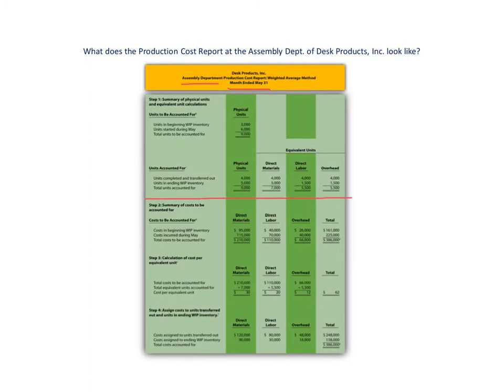That's step one. We'll get into the details in just a second so you get a better look at it. Then step two is the second section, step three is the third section, and at the very bottom you'll see step four — that's the fourth part of the production cost report.